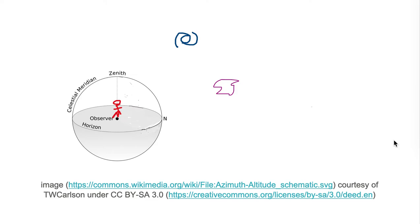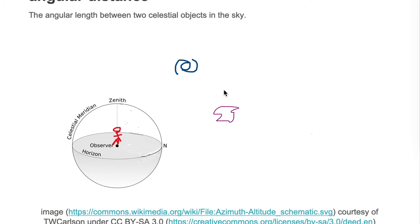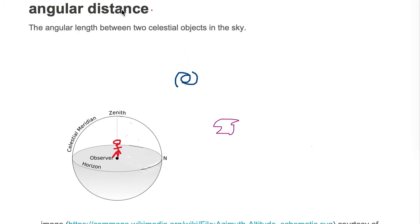They're looking at two celestial objects in their local sky - a spiral galaxy and a nebula. We want to find the angular distance, which is the angular length between the two celestial objects in the sky.